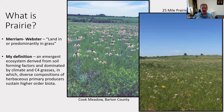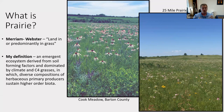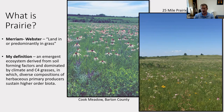They probably wouldn't agree on one single definition. What I can say is that we would all probably conclude that Merriam-Webster is lacking in their definition — 'land predominantly in grass' does not hold weight for those of us who have interacted with and spent time in prairies. So for the context of this research, I came up with my own definition: an emergent ecosystem derived from soil-forming factors and dominated by climate and C4 grasses, in which diverse compositions of herbaceous primary producers sustain higher order biodegradation.